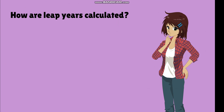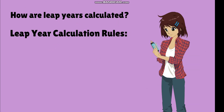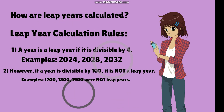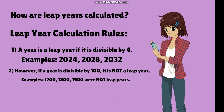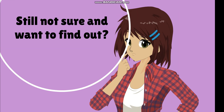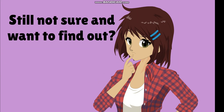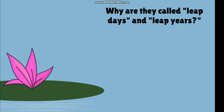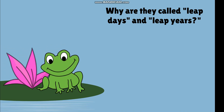How are leap years calculated? How do we know if a year is a leap year or not? There are rules: first, if a year is divisible by four, then it is a leap year. Second, if a year is divisible by 100, then it is not a leap year. Third, unless the year is also divisible by 400, then it is still a leap year. Still not sure? Go online to a leap year calculator website to find out — it's quick and simple.